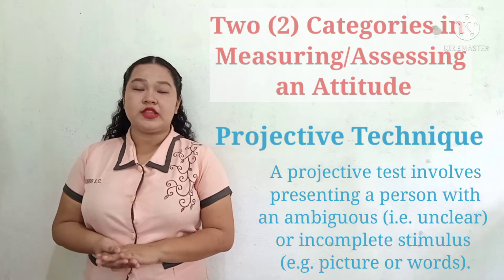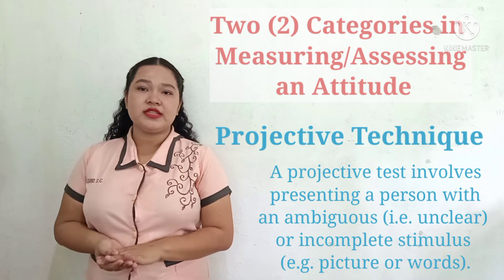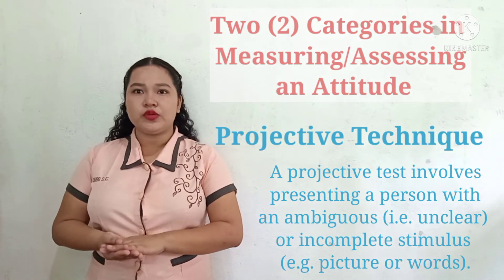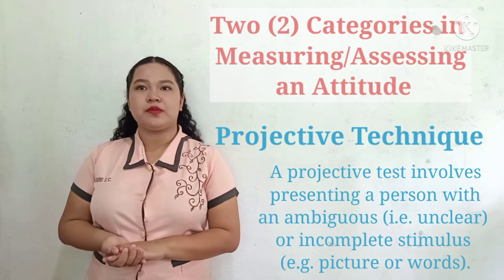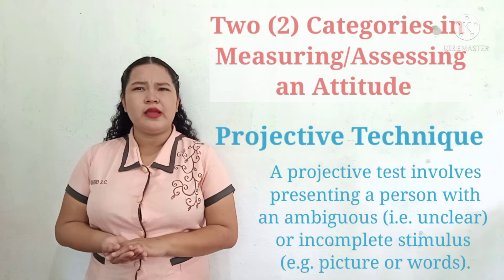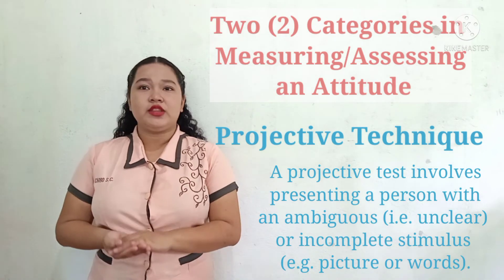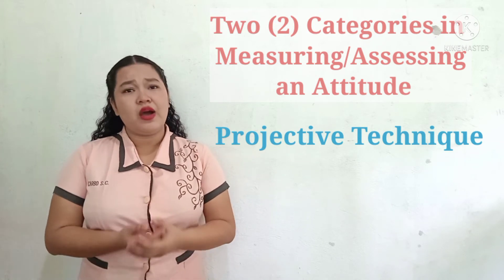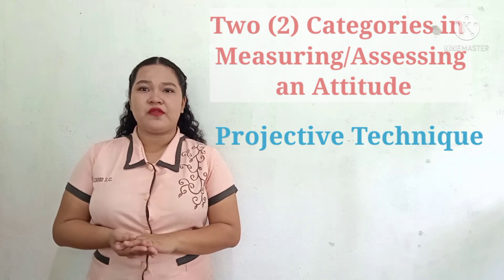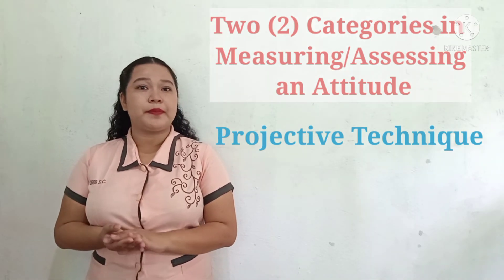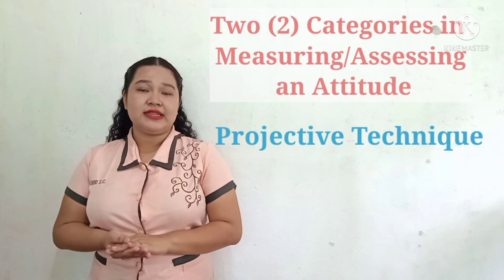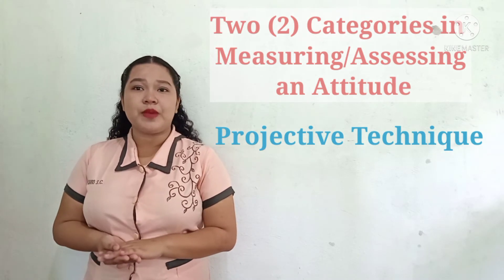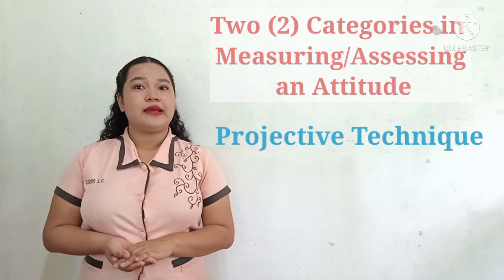The stimulus requires interpretation from the person. Therefore, a person's attitude is inferred from their interpretation of the ambiguous or incomplete stimulus. The assumption is that the person will project their views, opinions, or attitude into the ambiguous situation, thus revealing the attitudes the person holds. However, indirect methods only provide general information and do not offer a precise measurement of attitude strength, since it is qualitative rather than quantitative. This method of attitude measurement is not objective or scientific, which is a major criticism.